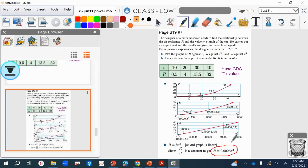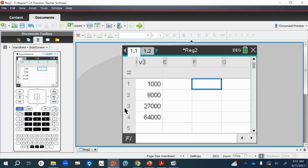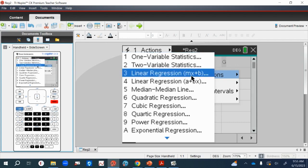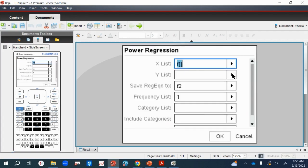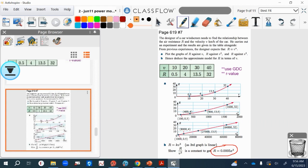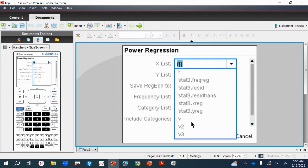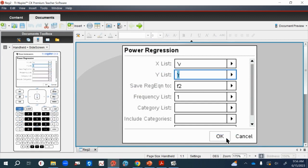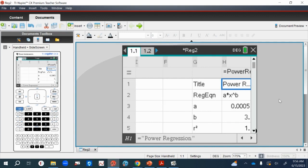We should be able to use our GDC to work out what that best model was as well, rather than going through plotting those three graphs and seeing it more visually. We should be able to use power regression. So let's try and do that. Go into statistics, stat calculations, power regression. X is v and y is r. And then you just click on OK. And there we go. So that's given us that best model there. So a is the coefficient of x, 0.0005, and b is the power three.